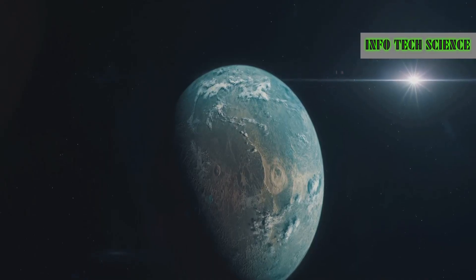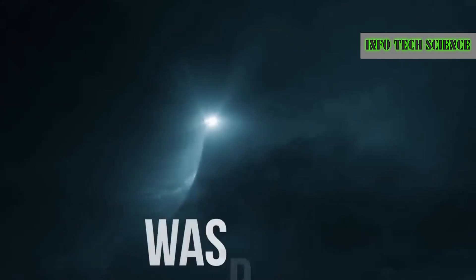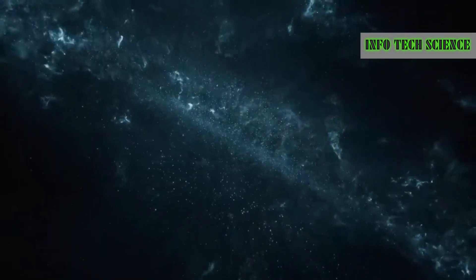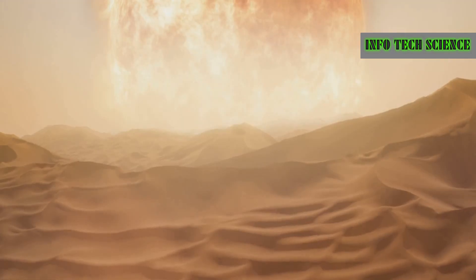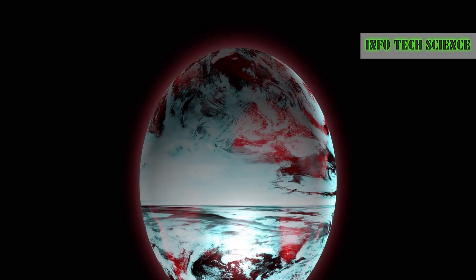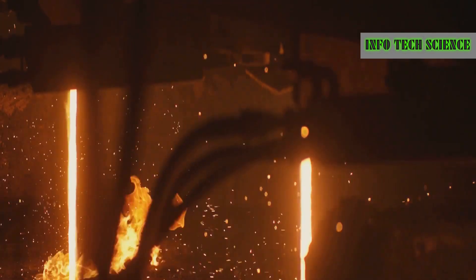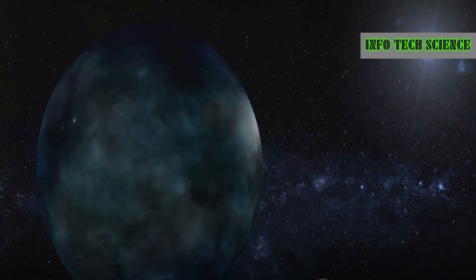Exoplanets are unique and diverse, and their climates can be surprising. Take WASP-76b for example - it's the first exoplanet found to contain barium, one of the heaviest known elements. One side of WASP-76b always faces its star, causing temperatures to reach almost 2,500 degrees Celsius. This is 1,000 degrees higher than the melting point of iron. The planet is full of iron, which not only melts but vaporizes. The vapor then moves to the other side of the planet, which is in perpetual darkness.